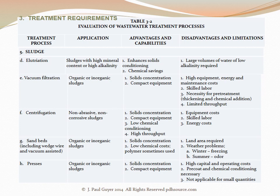The next treatment process is sand beds, which includes wedge wire and vacuum-assisted sand beds, applicable to organic or inorganic sludges. The advantages are the high concentration of solids achieved and low chemical costs. The disadvantages are the large land area required, weather problems in winter from freezing and in summer from odors. The next treatment process is presses, applicable to organic or inorganic sludges. The advantages are the high degree of concentration of solids achieved and the compact equipment used. The disadvantages are high capital and operating costs, the need for pre-coat and chemical conditioning, and the possibility that it is not applicable for small quantities.